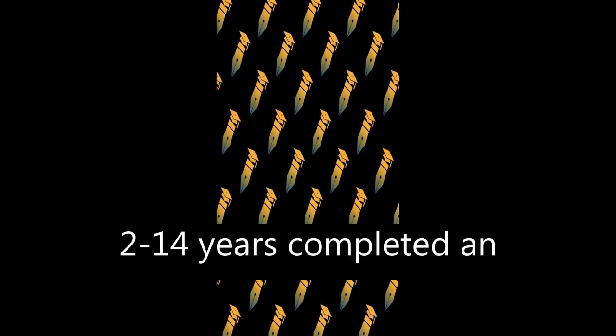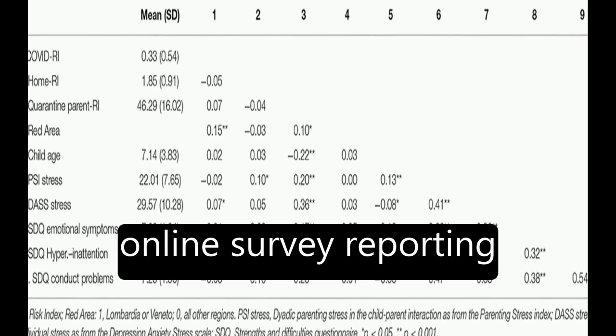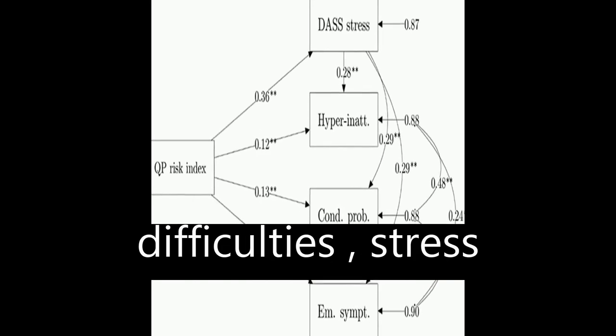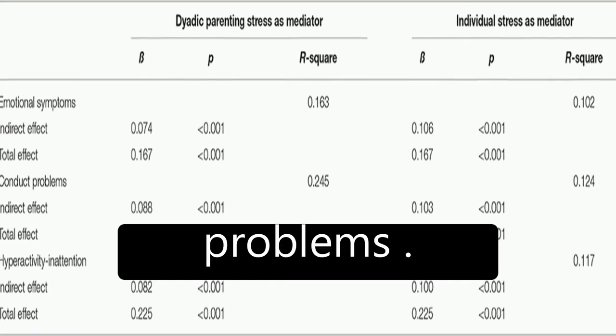Parents of children aged 2 to 14 years completed an online survey reporting their home environment conditions, pandemic consequences, quarantine difficulties, stress levels, and children's emotional and behavioral problems.